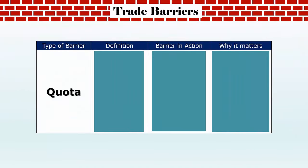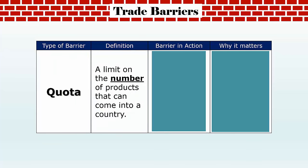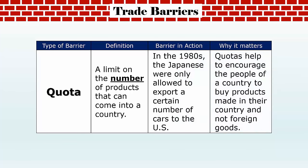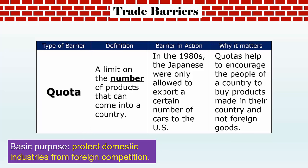Our next trade barrier is a quota. A quota is defined as a limit on the number of specific products that can come into a country. It works similarly to a tariff and has a similar effect, but this time you are limiting the number of products rather than taxing them. The most famous example is from the 1980s, when Japan was limited to exporting only a certain number of cars to the United States. Like tariffs, a quota's purpose is to protect domestic industries from foreign competition.